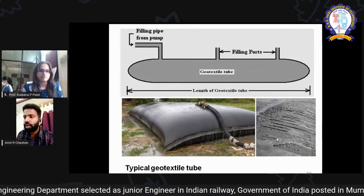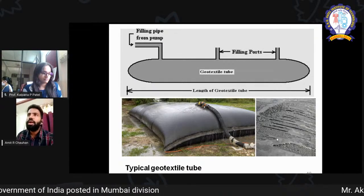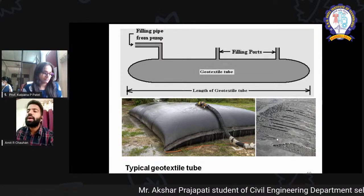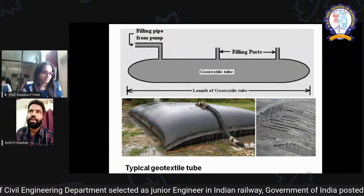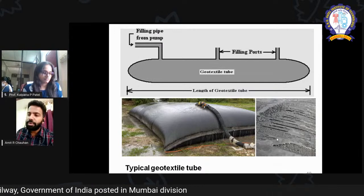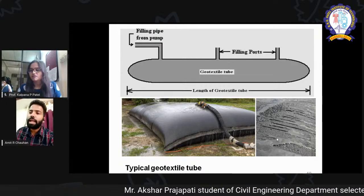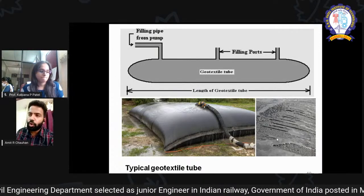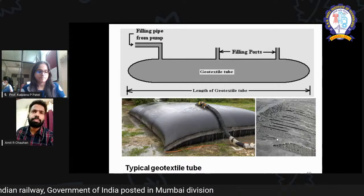Geotextile tubes are a very modern innovation. A geotextile tube is a tube into which dredged material like soil mixed with water is pumped. The pressure generated causes water to release through the small openings in the geotextile, while the soil is retained inside. You don't need to remove the material back — it will also act as a barrier so that no surrounding environment is impacted. These kinds of tubes can be arranged like geofoam blocks for various application purposes.